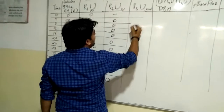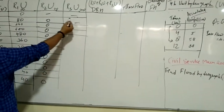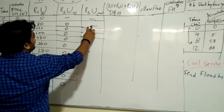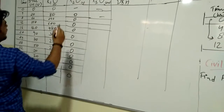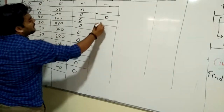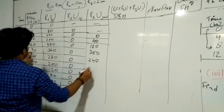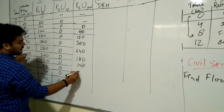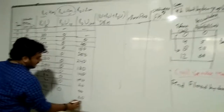For R3 = 2 cm, lagged by 8 hours as rainfall intensity is obtained after 8 hours, we multiply the 2 cm DRD with the ordinates of the unit hydrograph. Multiplying 2 × 0 = 0, then 2 × 20 = 40, then 120, 300, 240, 180, 140, 100, 60, 40, 20, and 0.